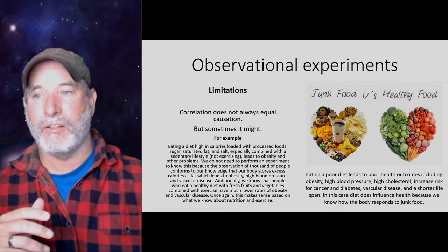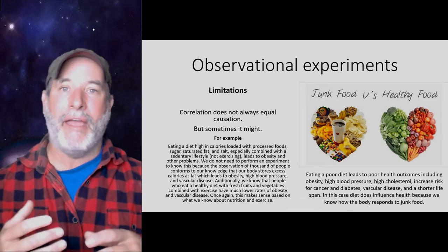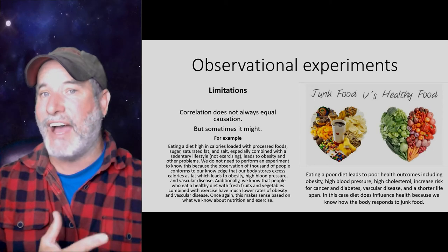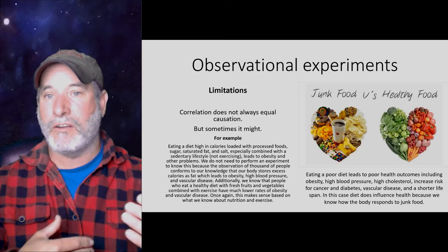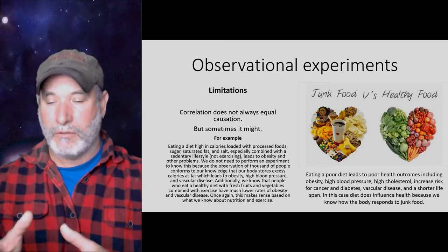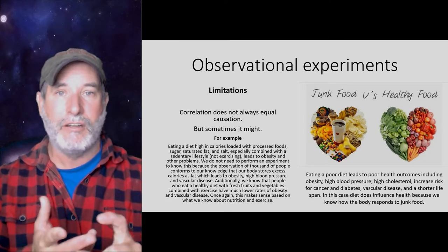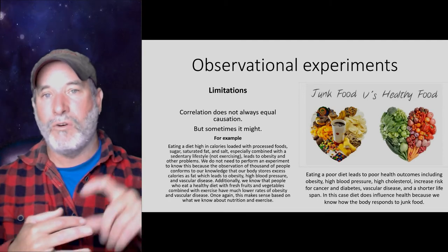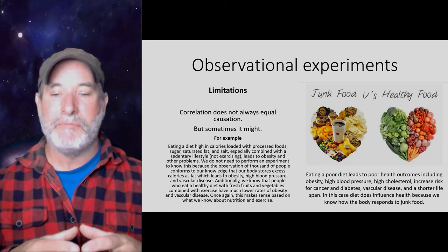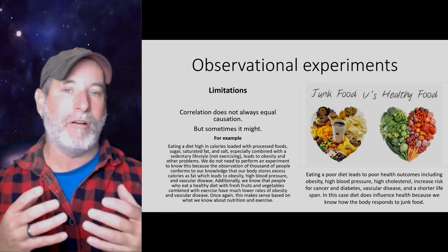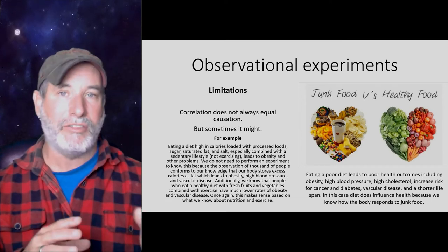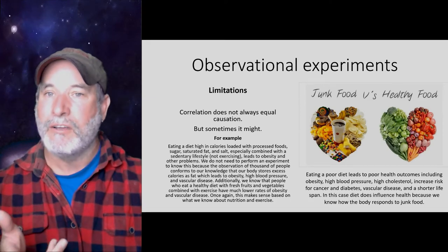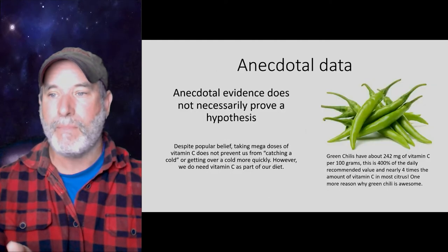However, sometimes correlation does mean causation when there's no alternative explanation. If you're eating lots of junk food and gaining weight, that makes sense — junk food is high in calories, and we know people store fat when they take in excess calories. The correlation between a high-caloric diet of fat, sugar, and processed food leading to weight gain, vascular disease, obesity, and diabetes for some people is supported by what we know about metabolism. So in this case, the correlation does indicate causation.